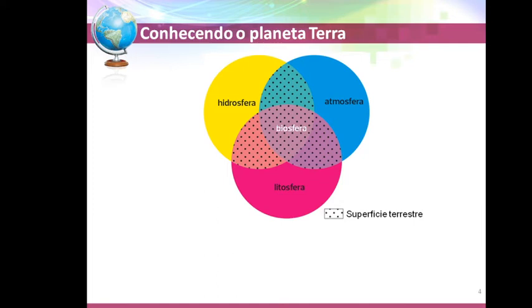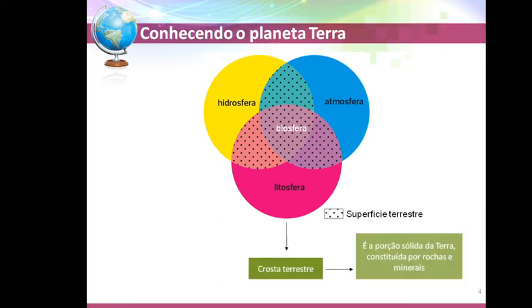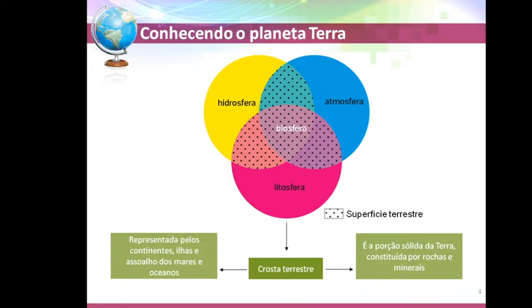Vou descrever brevemente o que é cada item. Litosfera ou crosta terrestre: a crosta terrestre é a porção sólida da Terra, constituída por rochas e minerais. Mais à frente teremos uma pequena aula sobre rochas e minerais — qual é a distinção e como são compostos. A crosta terrestre é representada pelos continentes, ilhas, assoalhos dos mares e oceanos.